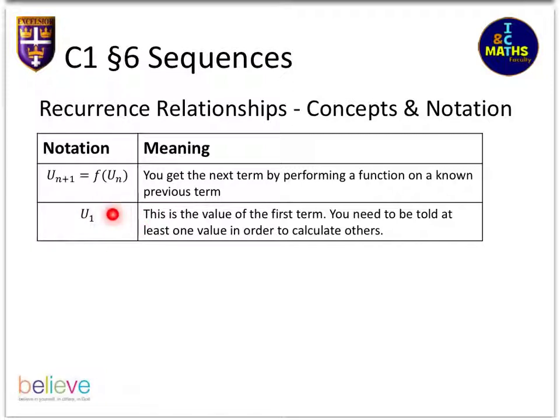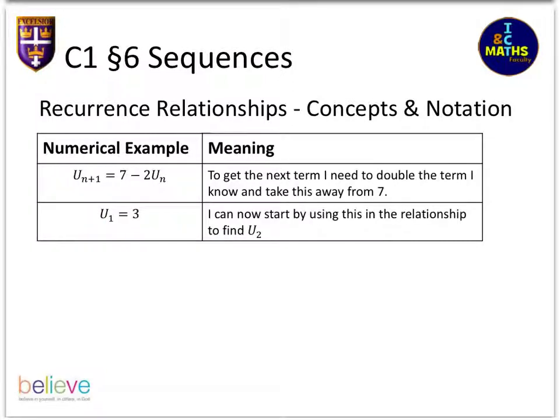Here's a numerical example. Here's my relationship that I've described: to get the next one you do the number seven and take away two lots of the previous one. And here, like I say, I couldn't possibly get started unless they told me what the very first one is.